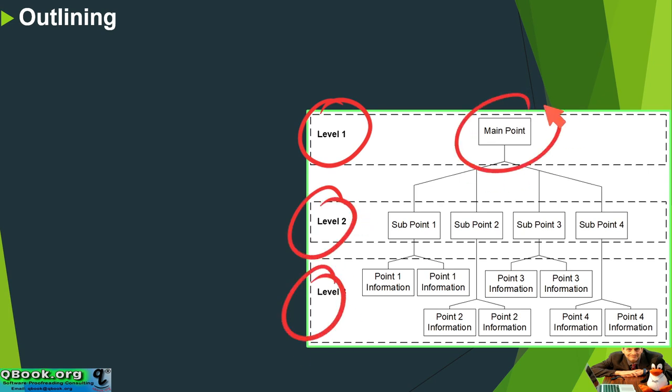And of course, level number one is our top main point. And then these are supporting points. And then each one of these can have supporting sub points. And you can have sub sub points. So we have here three levels.